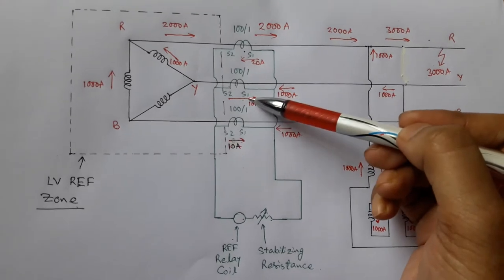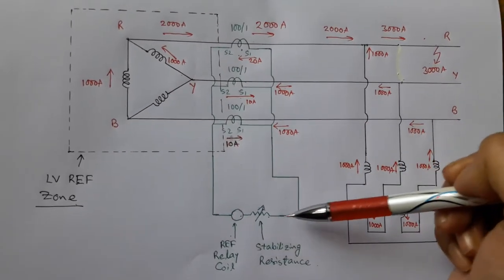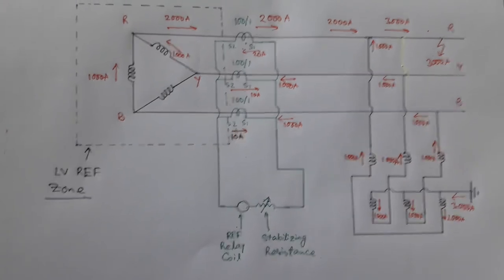Summation of these three currents is zero. So this restricted earth fault relay will not operate.